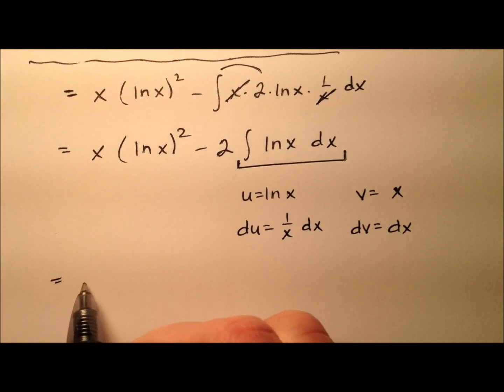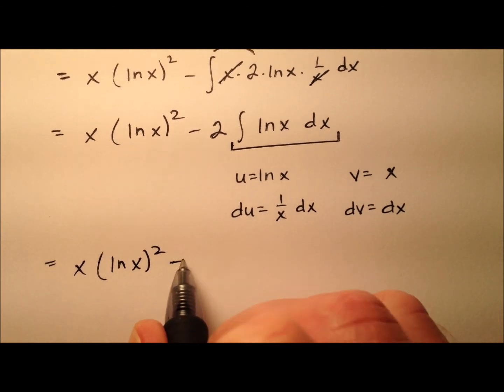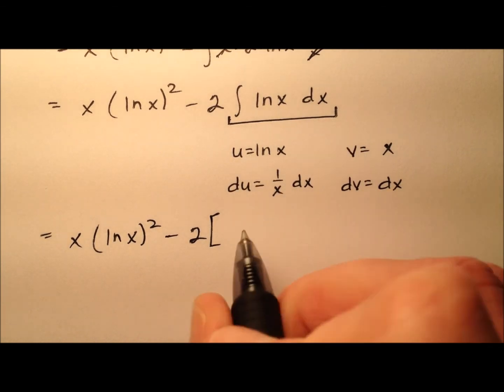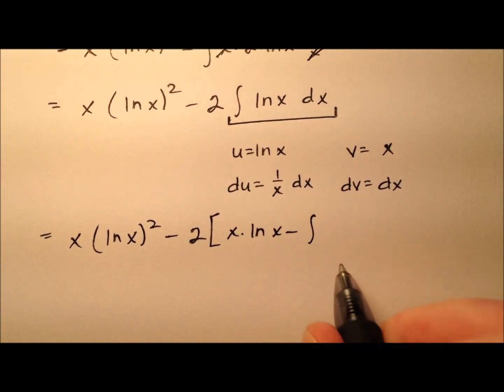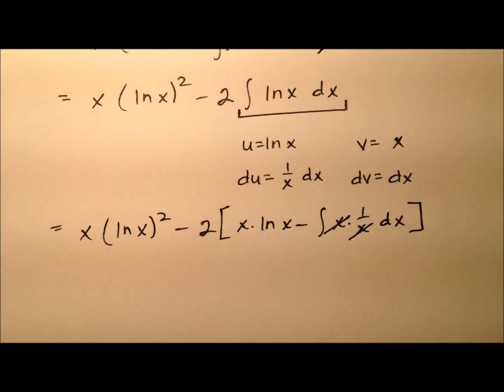So what I have here is, I'm just going to rewrite all of this. So minus 2 times, and we have our formula, u times v, so x times the ln of x minus the integral of x times 1 over x dx. And of course those cancel.